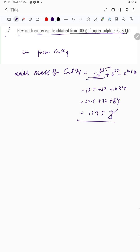63.5 grams copper. Amount of copper is 63.5 grams in how much? 159.5 grams CuSO₄.